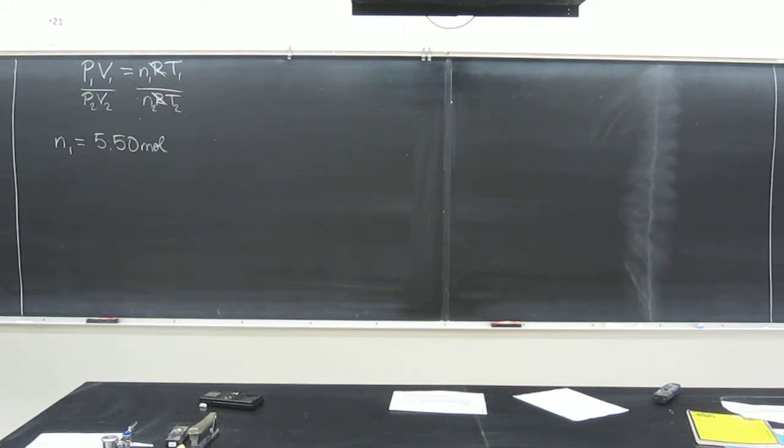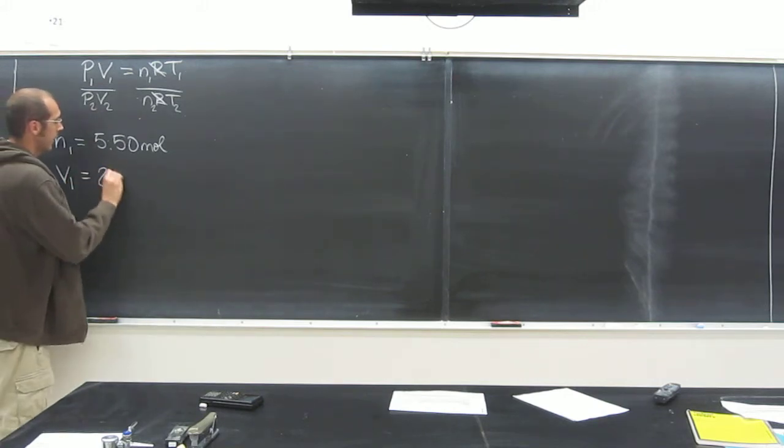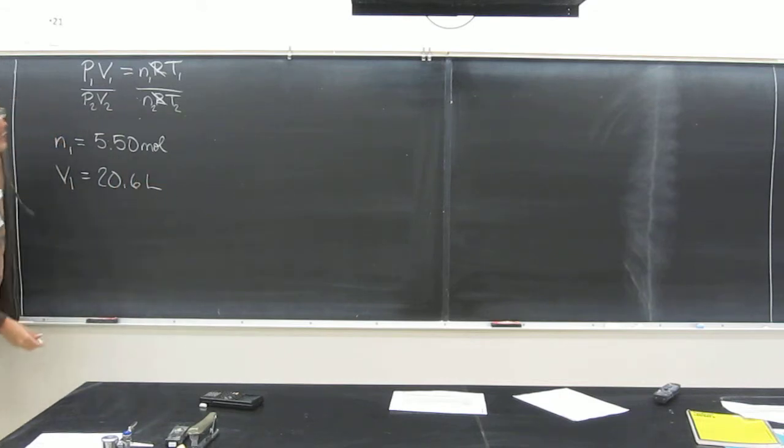What else did it give us? Volume. Initial volume, right? It gave us the volume initial. And what was that? 20.6. V1 equals 20.6 liters.